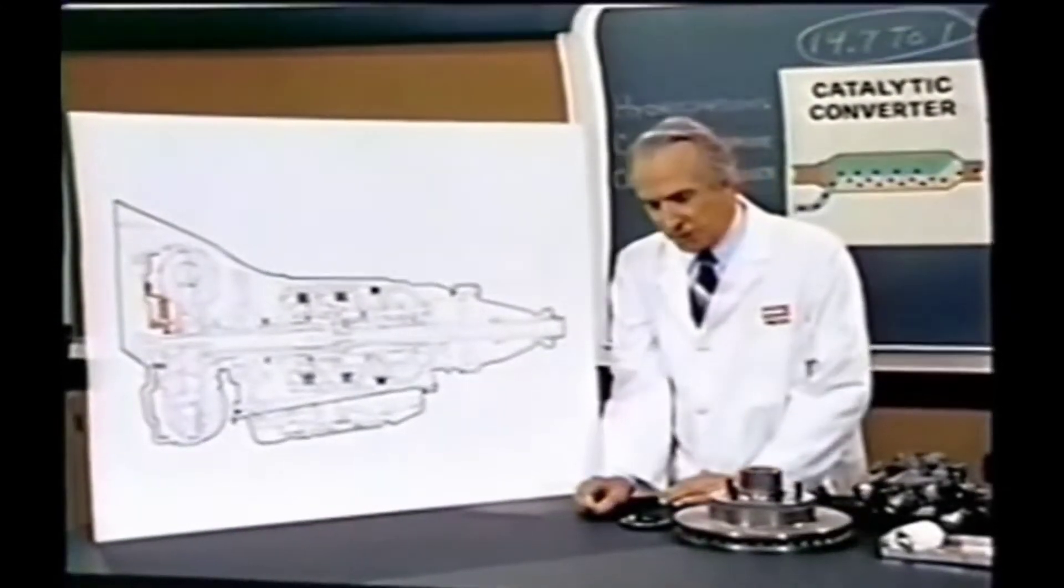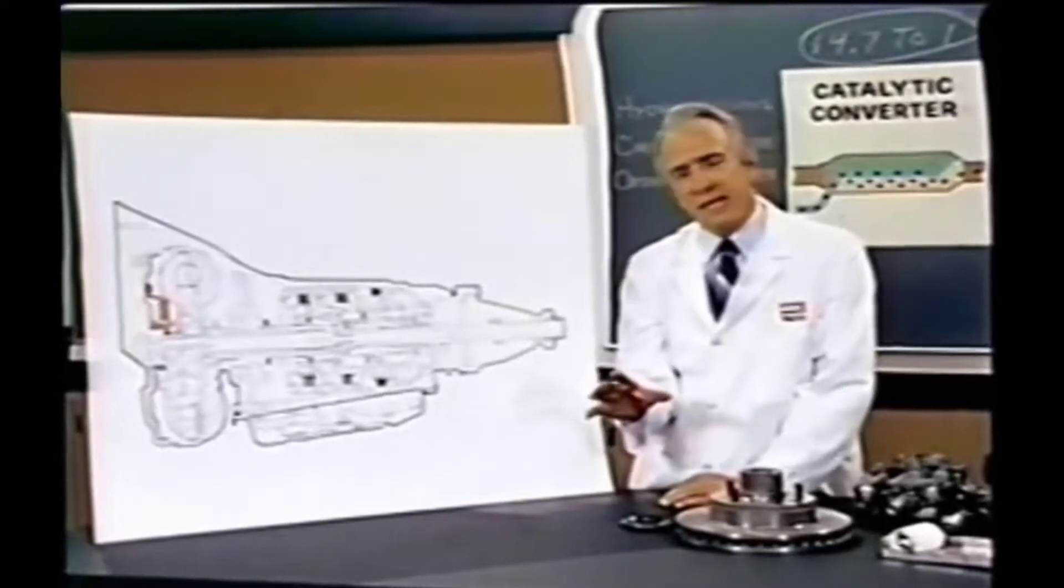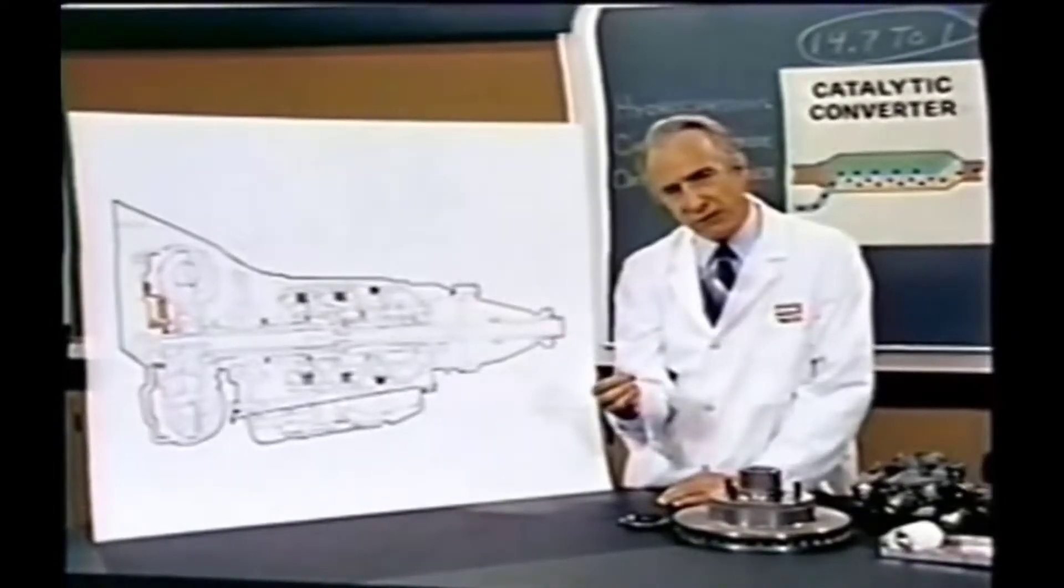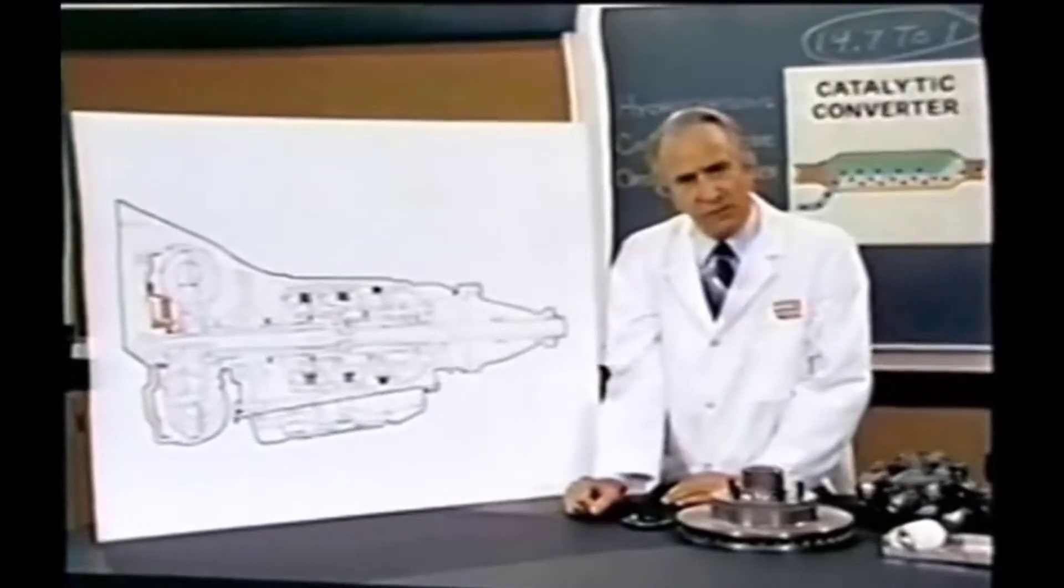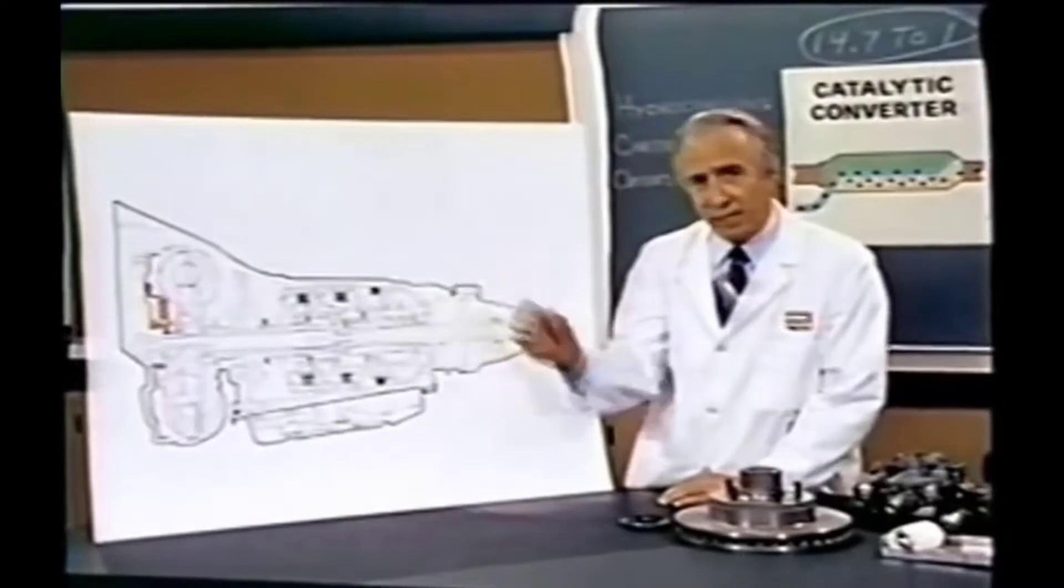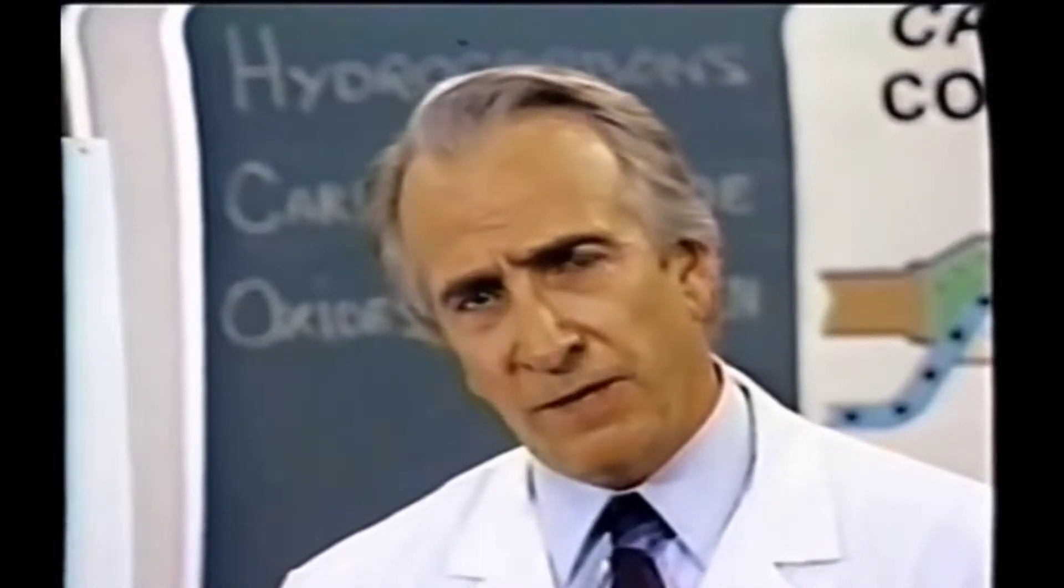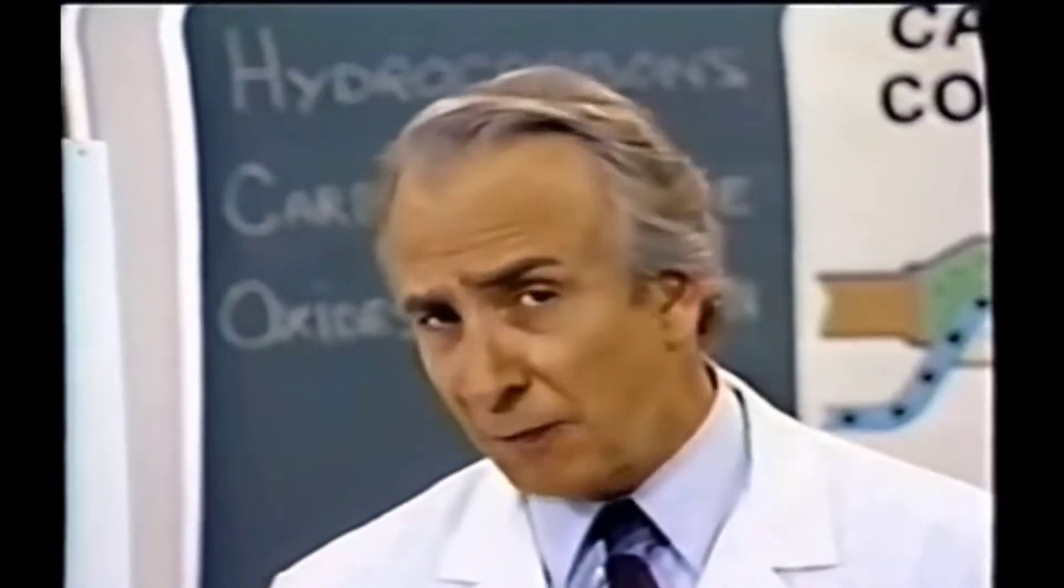For a number of years now, work has been proceeding to bring perfection to the crudely conceived idea of a transmission that would not only supply inverse reactive current for use in unilateral phase detractors, but would also be capable of automatically synchronizing cardinal grammeters. Such an instrument is the turbo encabulator. Basically, the only new principle involved is that instead of power being generated by the relative motion of conductors and fluxes, it is produced by the modial interaction of magneto-reluctance and capacitive directance. The original machine had a base plate of pre-famulated amulite surmounted by a malleable logarithmic casing in such a way that the two spurving bearings were in a direct line with the panometric fam. The latter consisted simply of six hydrocoptic marzal veins fitted to the ambifacient lunar wane shaft so that side fumbling was effectively prevented.